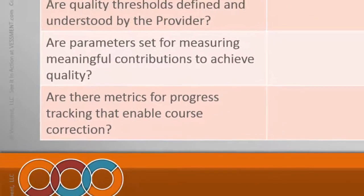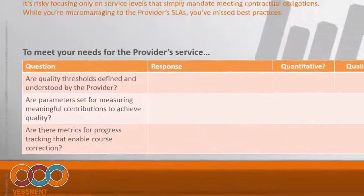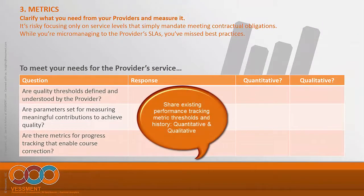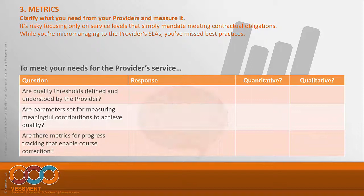Common responses here would include identifying existing performance tracking and metrics you can share transparently with the provider — being truthful about areas you're proud of and areas needing improvement. Indeed, the vendor or provider might themselves have ways of improving on those areas.